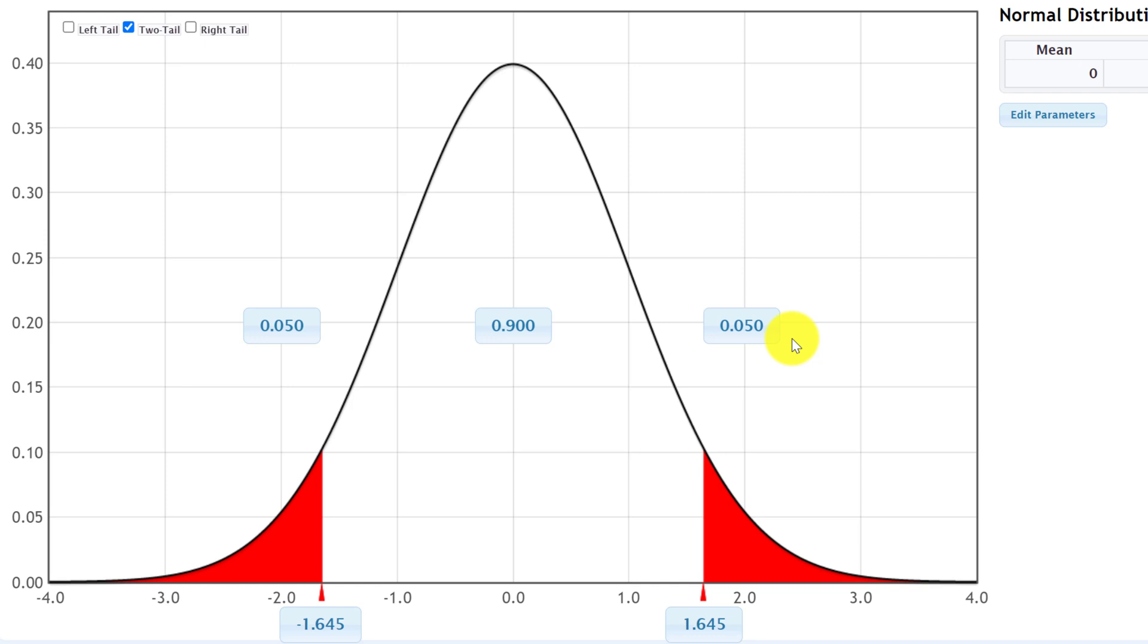So you can use StatKey to find the Z critical values for any alpha level. You just need to change either the proportion that's split between the two tails or the proportion in the middle. You also have the option of using this for a left tail test or a right tail test.